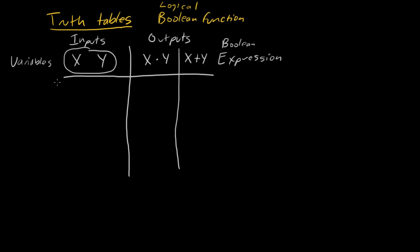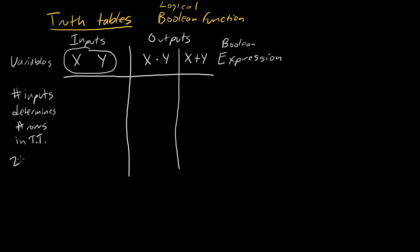In our truth table, the number of inputs determines how many rows are going to be in the table. Two to the power of the number of inputs gives the number of rows. With two inputs, two squared is four, so we need four rows.